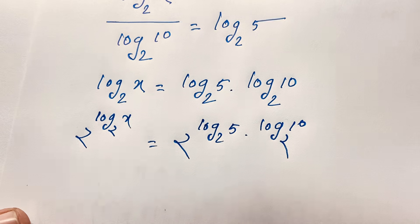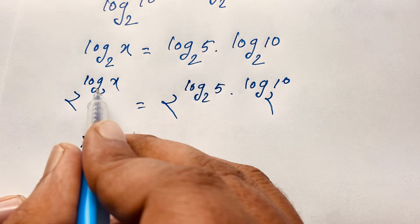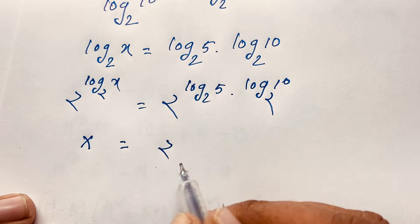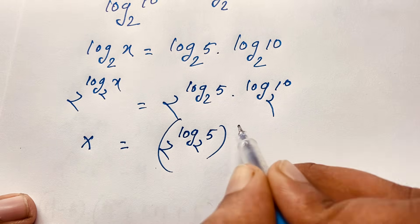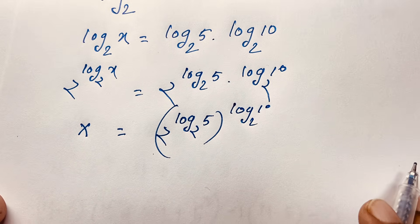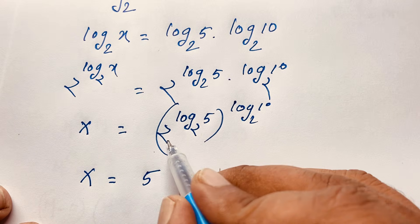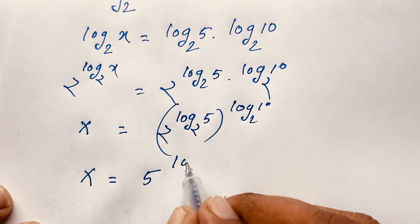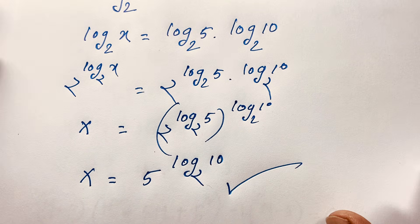Since 2 to the power log base 2 of x equals x, the left side simplifies to x. And 2 to the power log base 2 of 5 equals 5, so x equals 5 to the power log base 2 of 10. This is our final answer: x equals 5 to the power log base 2 of 10.